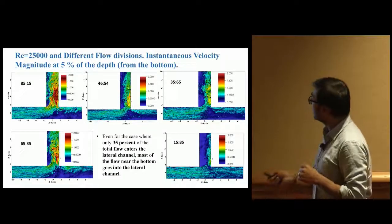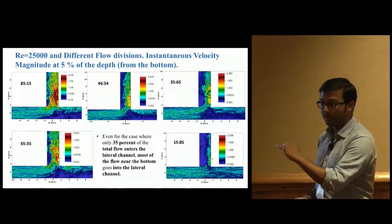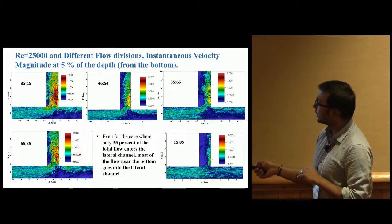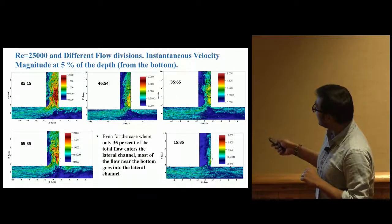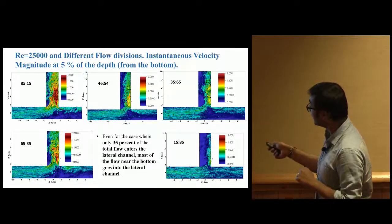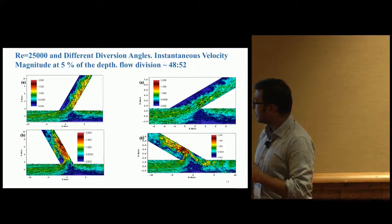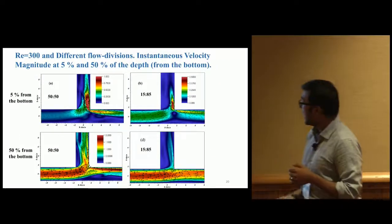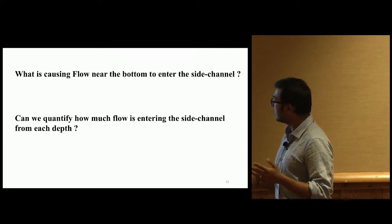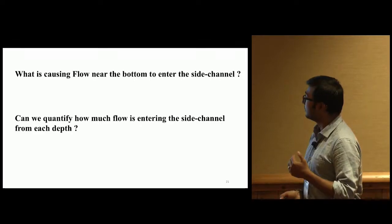For Reynolds 25,000 with different flow splits, velocity magnitude at 5% height shows that even when only 35% of flow goes into the side channel and 65% continues into main channel, most flow near the bottom goes into the side channel. This shows up for different diversion angles and Reynolds numbers.